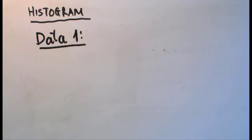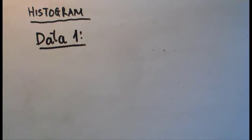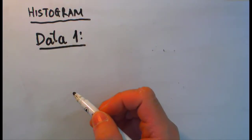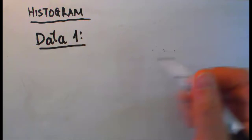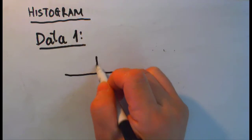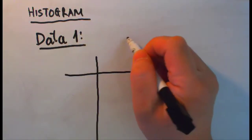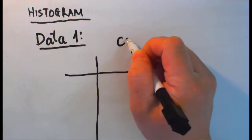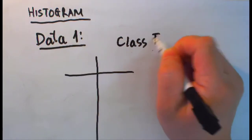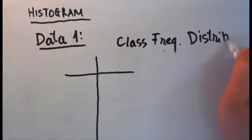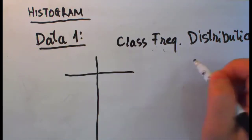The idea of getting a histogram is that before we can get any histogram, after sorting the data, we must also build a frequency table that I call the class frequency distribution table. So this table is called the class frequency distribution table.